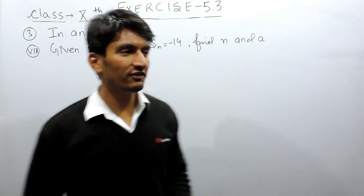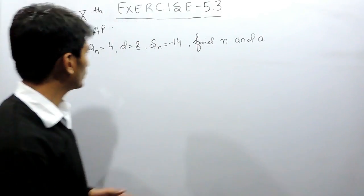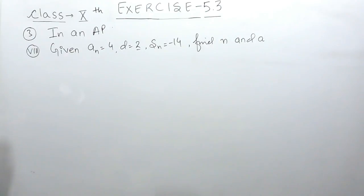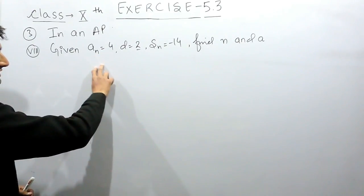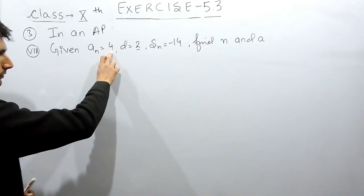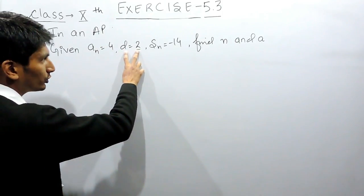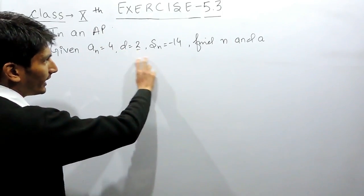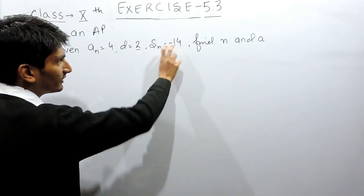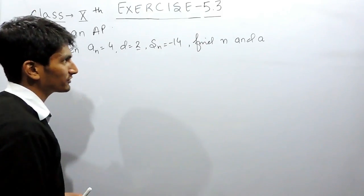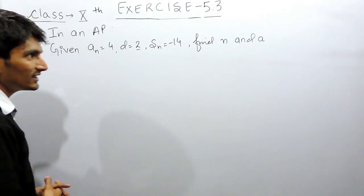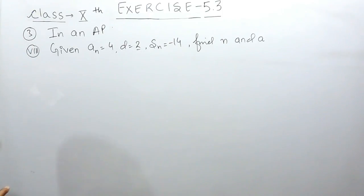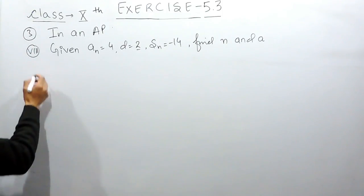Hello everyone. In this video we are going to solve part 8 of question number 3. Here the nth term is given as 4, the common difference is given as 2, and the sum of n terms is given as minus 14. We have to find the number of terms in this AP and the first term of this AP.